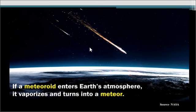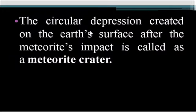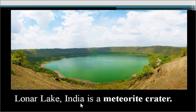If a meteoroid enters Earth's atmosphere, it vaporizes and turns into a meteor. The circular depression created on Earth's surface after a meteorite's impact is called a meteorite crater. If a crater is formed by the impact or falling speed of a meteorite on Earth's surface, it is called a meteorite crater. Lonar Lake in India is a meteorite crater, and from its image you can understand how large a meteorite can be — large enough to create a lake.